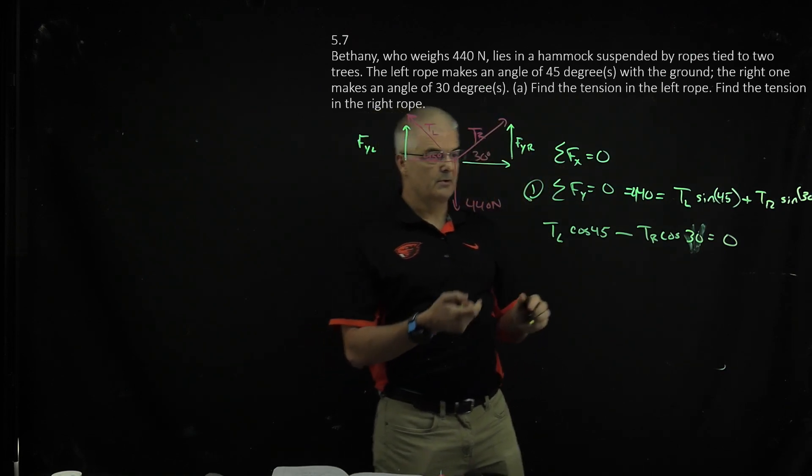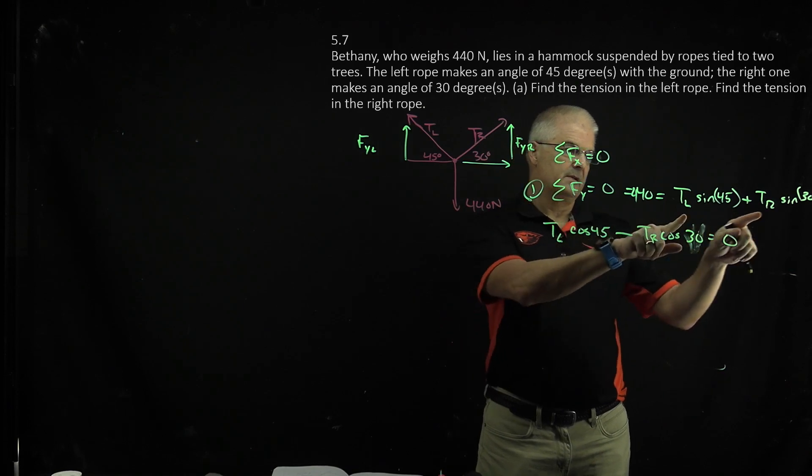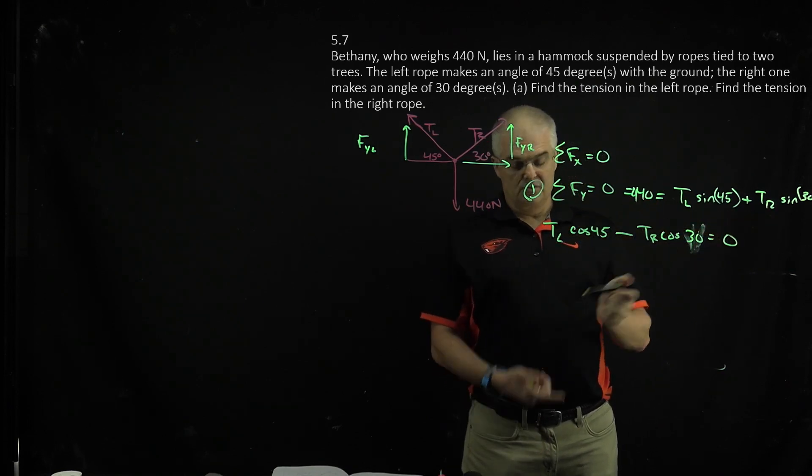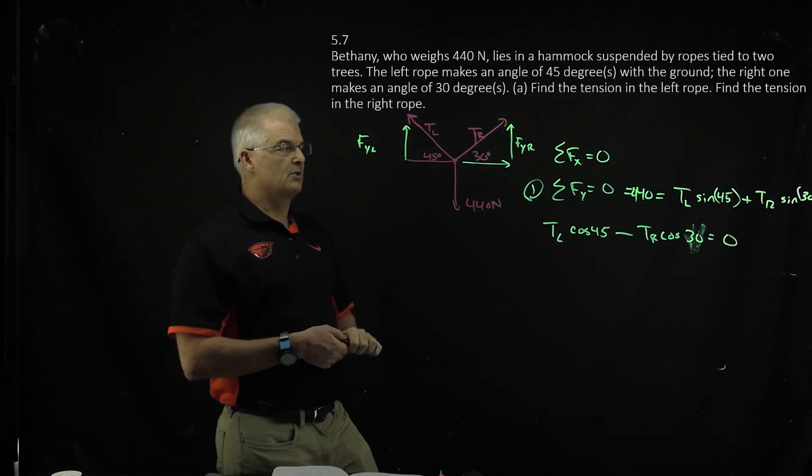So you now have two equations. If you want to call the tl as x and tr as y, you have two equations and two unknowns. You have to then substitute, graph, there's lots of ways you can do this to solve this problem.